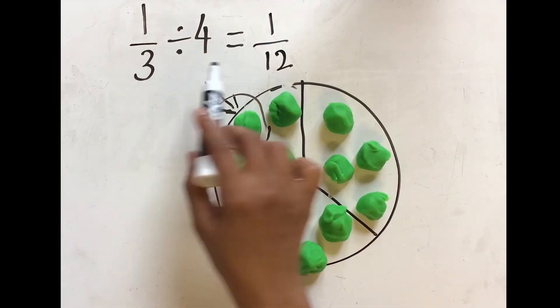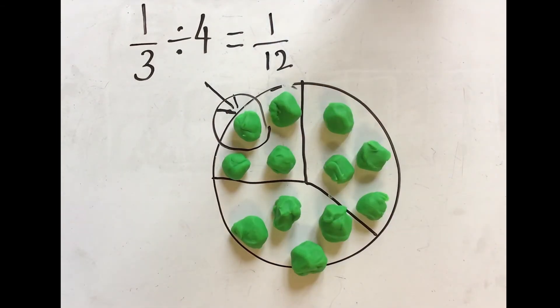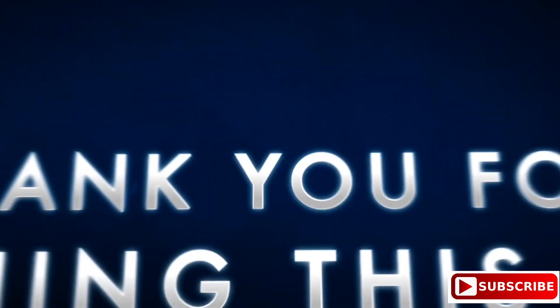So, 1/3 divided by 4 is nothing but 1/12.